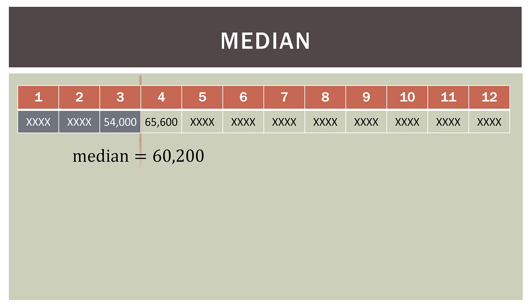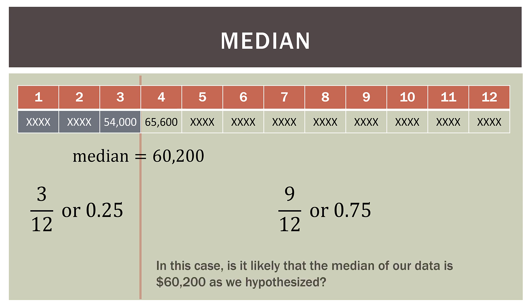So what about this value? So what about a median of $60,200? Let's say we hypothesize that that is the median of this data set. So we have three out of 12 observations below that. We have nine out of 12 observations above that value. So in this case, is it likely that the median of our data is $60,200 as we hypothesized? Well, see here, maybe not, probably not. Because we know that the median by definition is the middle of our data set, but three out of 12 on one side, and nine out of 12 on the other side, is not really the middle of our data.